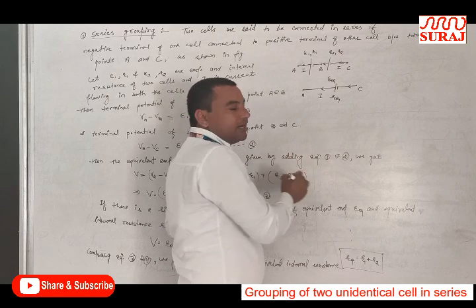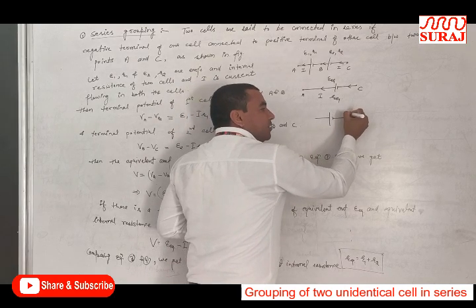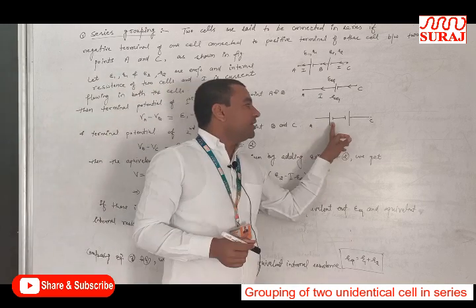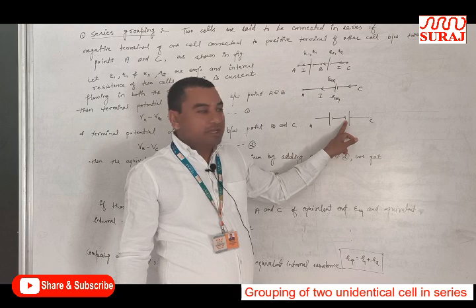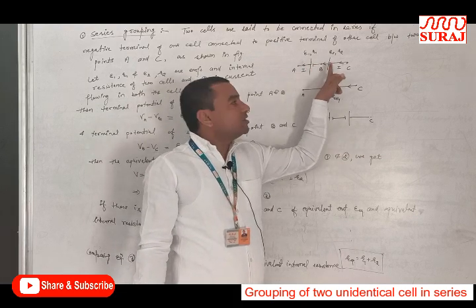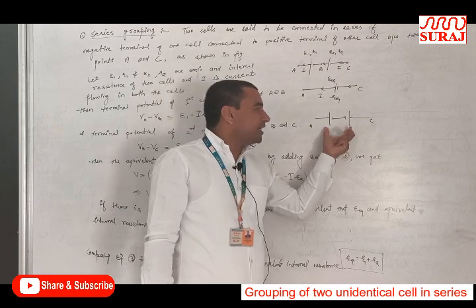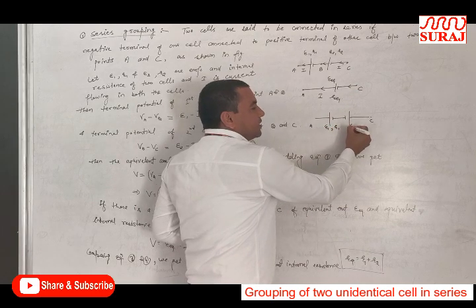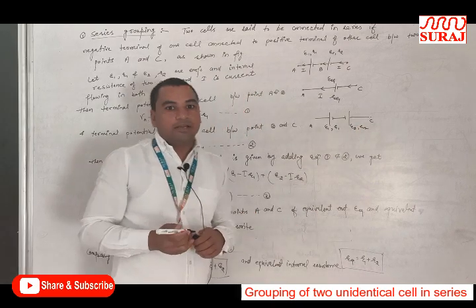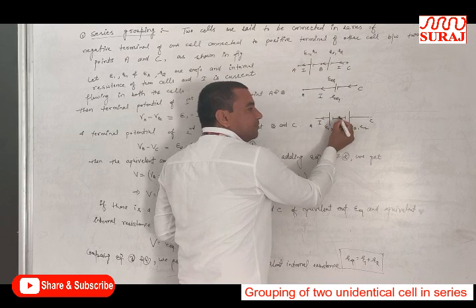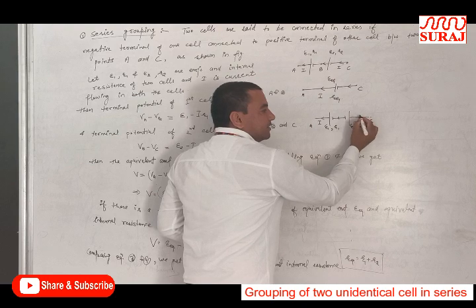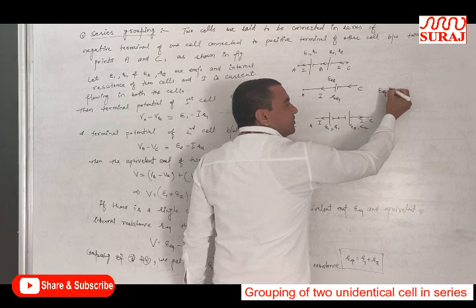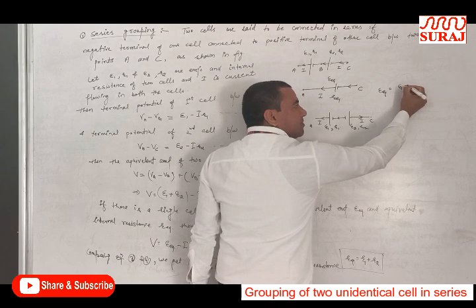Now, if two cells are connected with the negative terminal of the first cell connected to the negative terminal of the second cell — as shown in the figure — unlike the first case where we connected negative to positive, in this second case the current in both cells flows in opposite directions. So, the total equivalent EMF in this case is E1 minus E2.